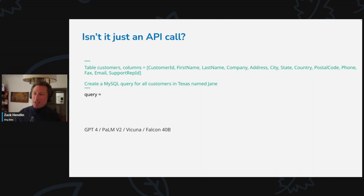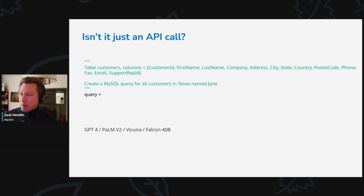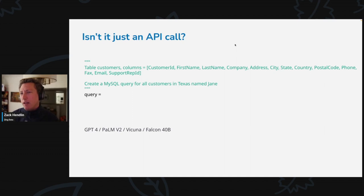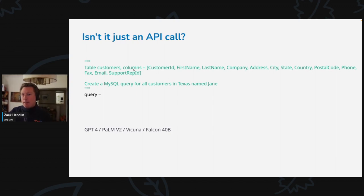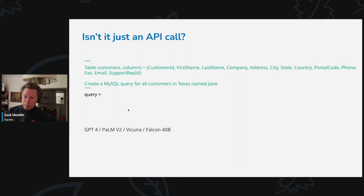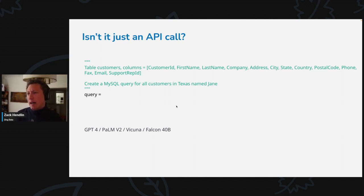Normally you might say it's super easy to jam an LLM into your app and create a great experience. You can kind of jam OpenAI or a text box into your app and get something you could probably demo well. But it's actually much harder to get good results in practice. If I wanted to get a SQL query for all customers in Texas with the name Jane, I would pass my schema — these columns — and the table name, in this case 'customers,' and tell it the query I want. GPT-4, PaLM v2, Vicuna can basically do that and get it right for a simple question. But with even slight complexity, they'll start getting it wrong.